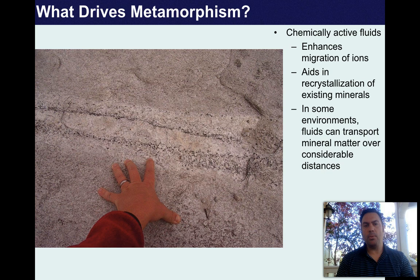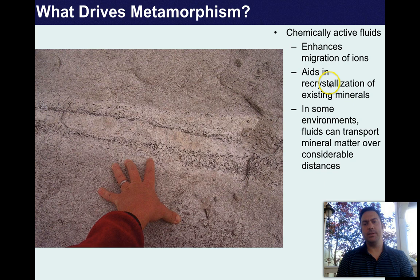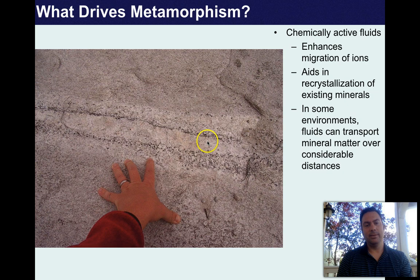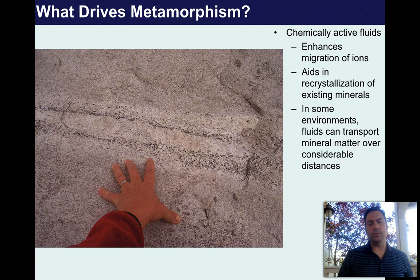Another really important component of metamorphism is the release and migration of chemically active fluids in rocks. We tend to think of rocks as dry, but water is pretty typical and enhances migration of ions, aiding recrystallization of existing minerals. In some environments, fluids can transport mineral matter — metals, potassium, and other ions — over considerable distances, sometimes about a mile away, creating a visible zone of alteration.